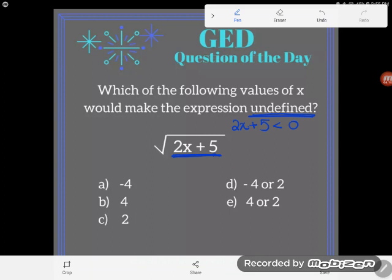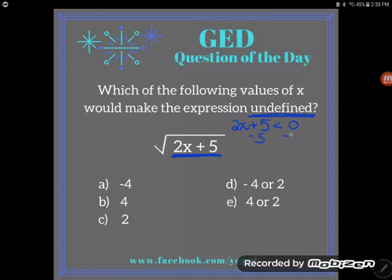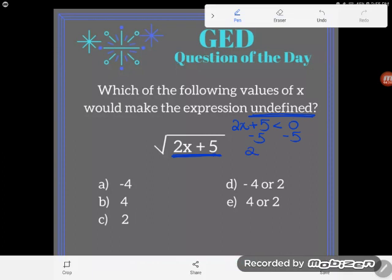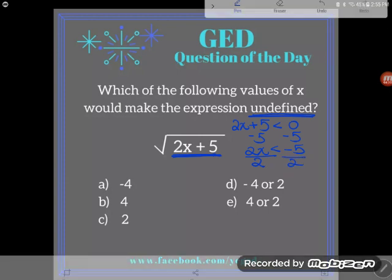Anything less than zero is negative. And so let's see what happens if I have it less than zero. Now let's just solve this little inequality here. Negative 5—I subtract 5 from both sides, and I get 2x is less than negative 5.